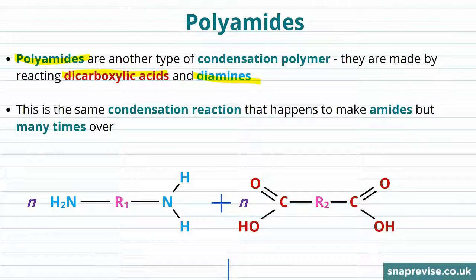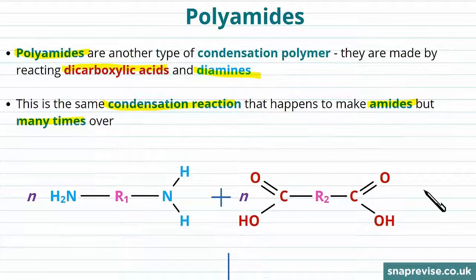Just as polyesters are made up from multiple esterification reactions, a polyamide is the same condensation reaction that happens to make amides, but many times over to form a chain of the monomers.